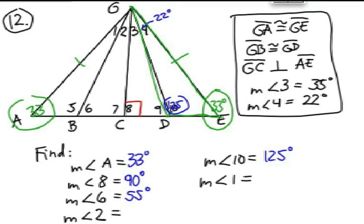So, angle 4 was 22 degrees. Angle 3 was 35 degrees. And so, angle 2 must also be 35 degrees. Angle 1 must be 22 degrees. So, 35 degrees, angle 2. Angle 1, 22 degrees. Good job.